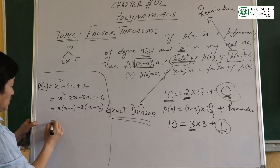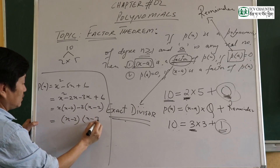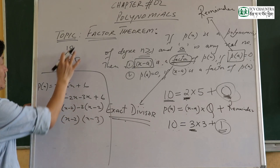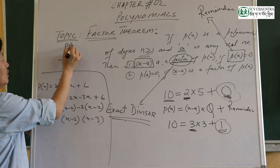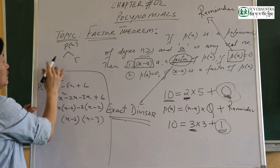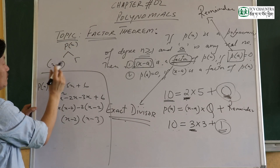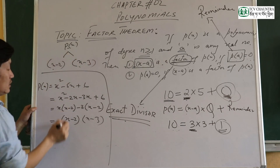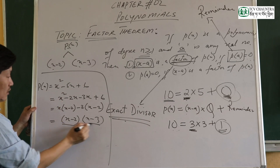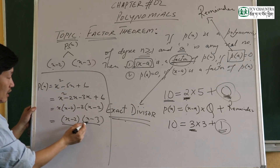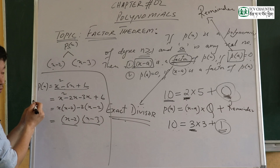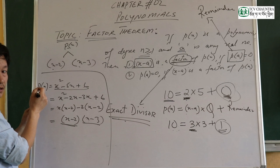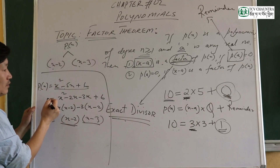X minus 2 into x minus 3. I'm going to take a look at the formula — the delta p(x). Then delta p(x) with x minus 2 on the left and x minus 3 on the right — they are the same. So x minus 2 and x minus 3 are factors.